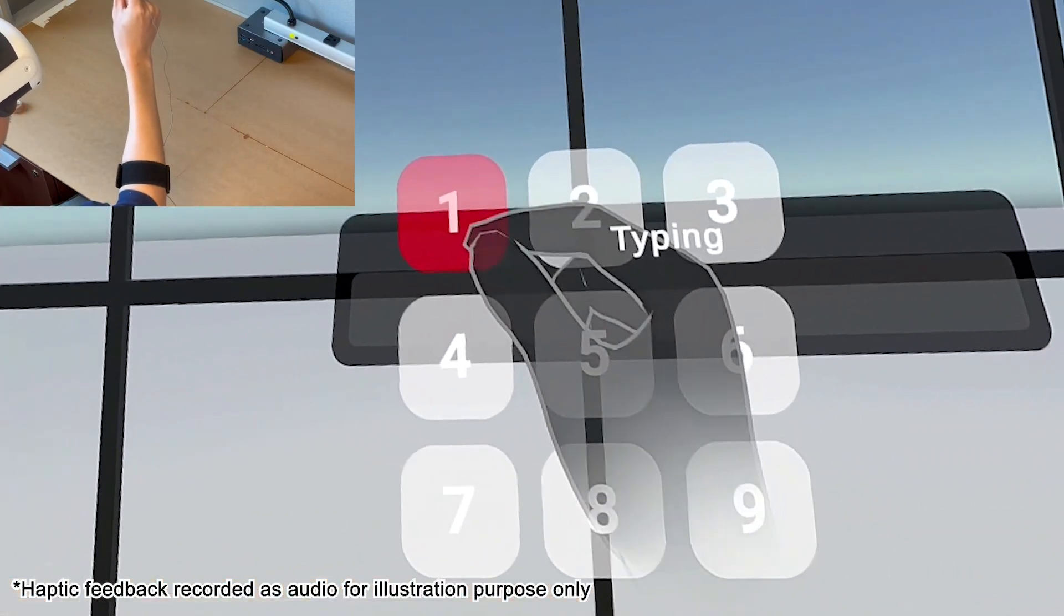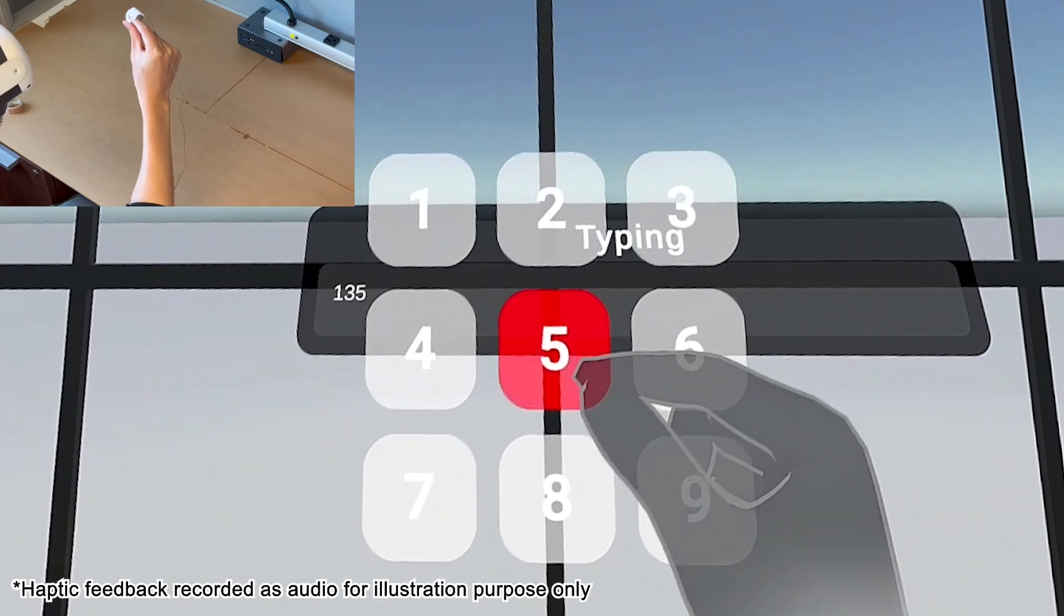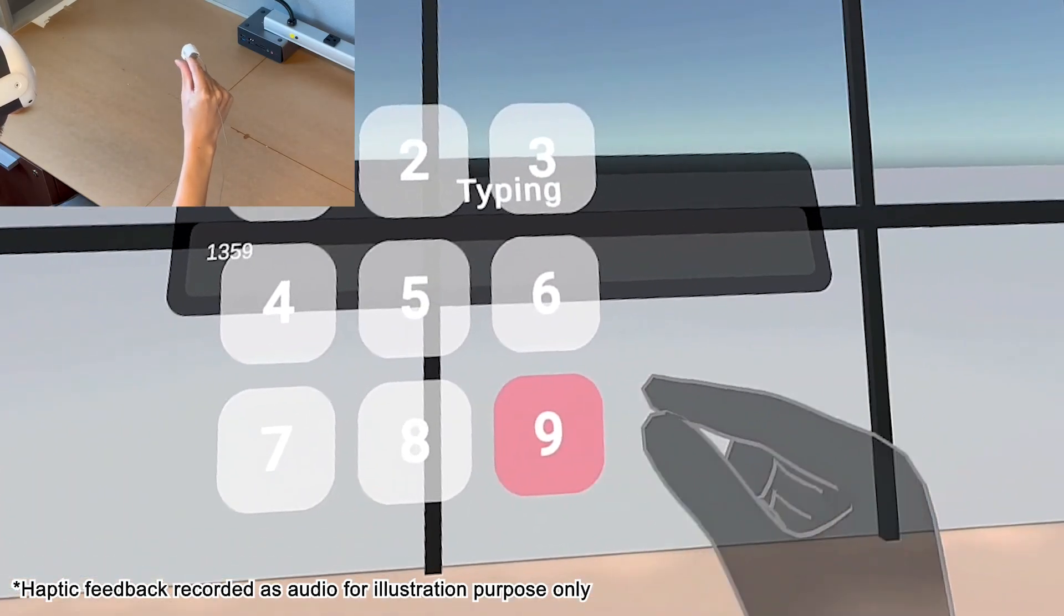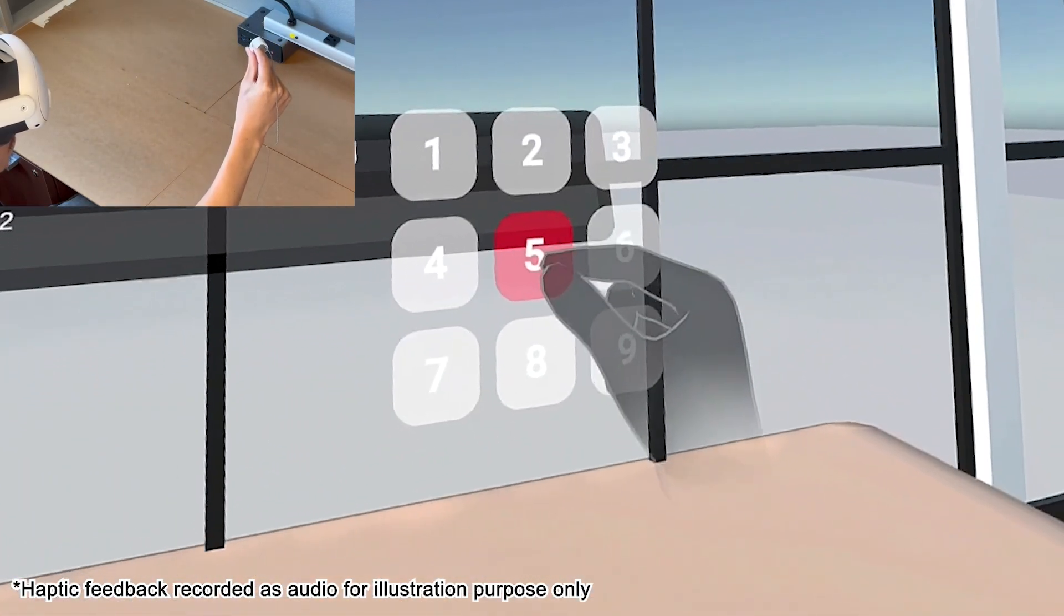In this scenario, an optically recognized pinch gesture brings up a floating number pad, and then the haptic coil enabled force pinches confirm individual button presses.